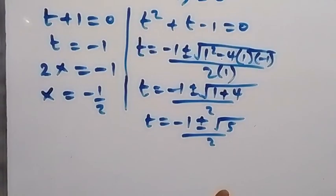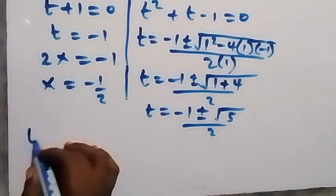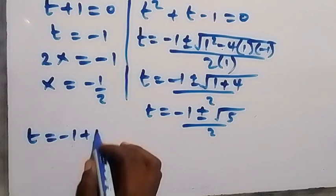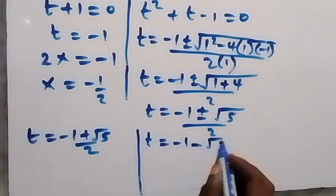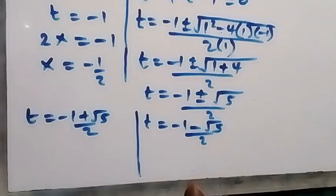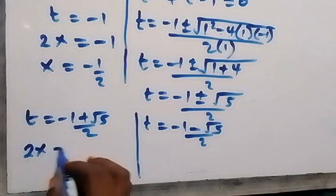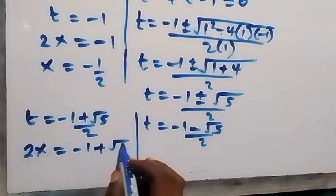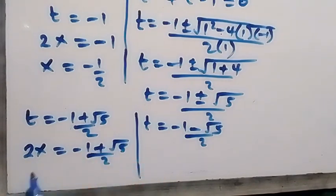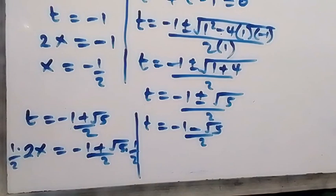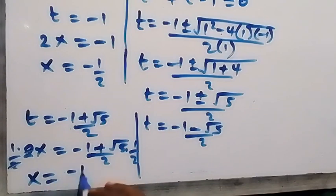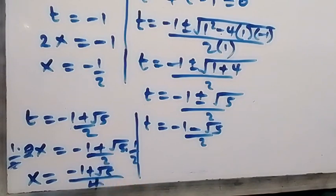Now we have two cases of t. The first case: t equals to minus 1 plus root 5 over 2. The second case: t equals to minus 1 minus root 5 over 2. Since t is represented as 2x, we have 2x equals to minus 1 plus root 5 over 2. Since we are finding x, we multiply both sides by 1 over 2, so this 2 cancels, and we have x equals to minus 1 plus root 5 over 4.